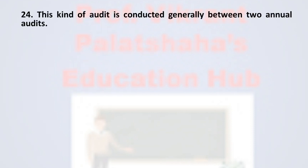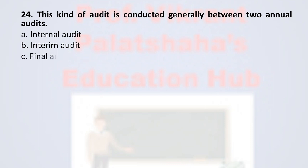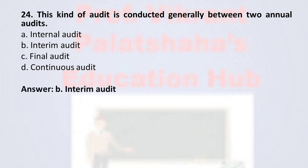Question number twenty-four: this kind of audit is conducted generally between two annual audits. Option A internal audit, option B interim audit, option C final audit, and option D continuous audit. The correct option is option B, interim audit — the audit conducted between two annual audits is called an interim audit.